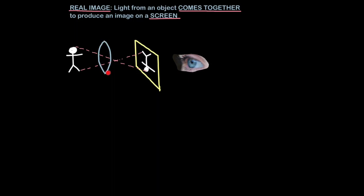Similarly, our eye has a lens like this, a converging lens. So when images form on the back of the layer of our eye called the retina, it's also a real image because it focuses on a screen.